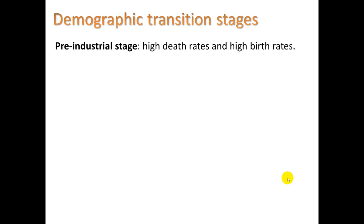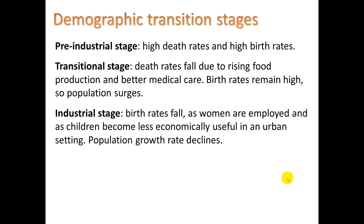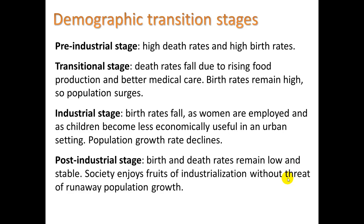To summarize the stages: pre-industrial has high death rates and high birth rates. Transitional stage sees death rates fall due to rising food production and better medical care, while birth rates remain high, so population surges. Industrial stage sees birth rates fall as women are employed and children become less economically useful in an urban setting — population growth rate declines. Post-industrial stage has both birth and death rates low and stable. Society enjoys the fruits of industrialization without the threat of runaway population growth, and a smaller, more affluent population can have the same environmental impact as a larger one.